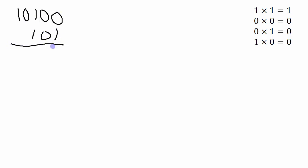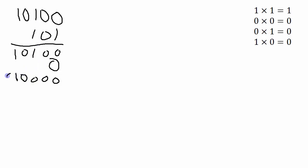One times zero is zero, one times zero is zero, one times one is one, one times zero is zero, and one times one is one. The next column is all zeros, so I'm just going to write in a zero here. The next column will be 100 times all of this, so I'll put in the two zeros. Then one times zero is zero, one times zero is zero, one times one is one, one times zero is zero, and one times one is one. Now I add up these three rows: zero plus zero plus zero gives me zero; zero plus zero plus zero gives me zero; one plus zero plus zero gives me one; zero plus zero plus zero is zero; one plus zero plus one is zero, carry the one; then one plus zero gives me one, and then a final one there.